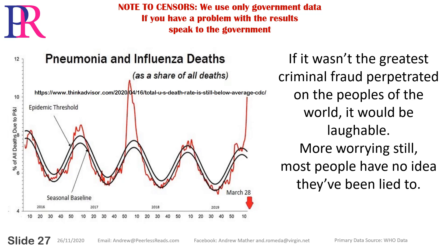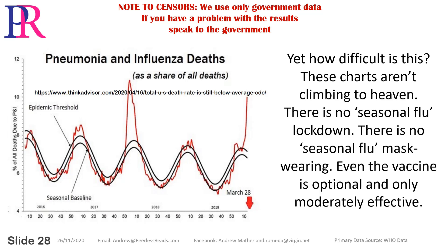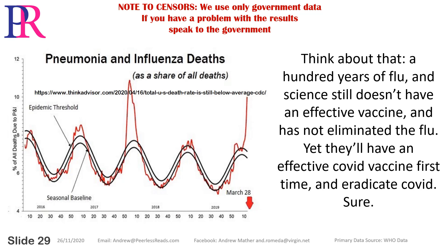More worrying still, most people have no idea they've been lied to. Yet how difficult is this? These charts aren't climbing to heaven. There is no seasonal flu lockdown, no seasonal flu mask wearing. Even the vaccine is optional and only moderately effective. Think about that: a hundred years of flu and science still doesn't have an effective vaccine and has not eliminated the flu. Yet they'll have an effective COVID vaccine first time and eradicate COVID. Sure.